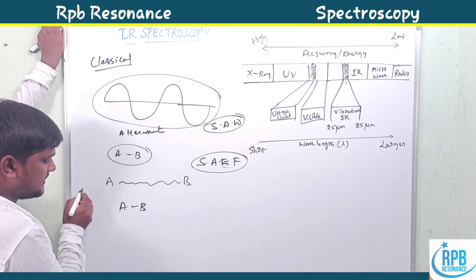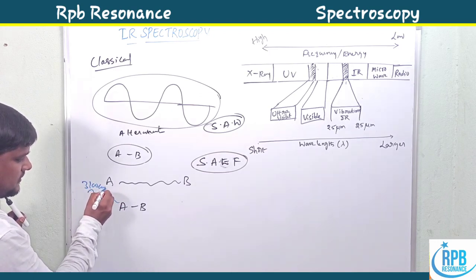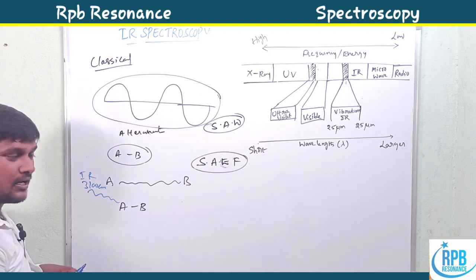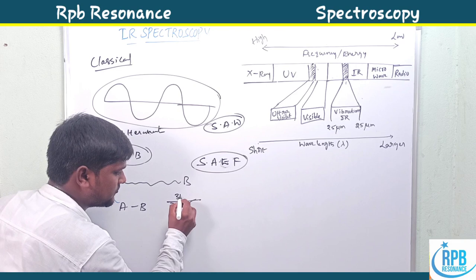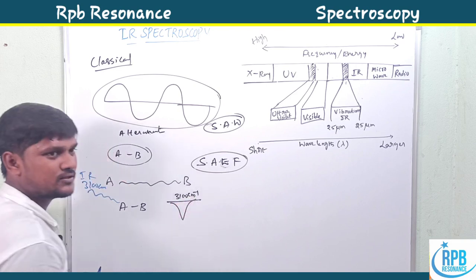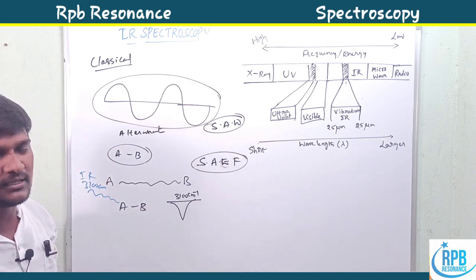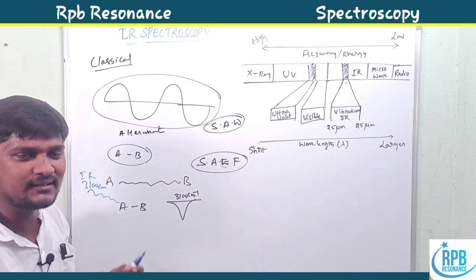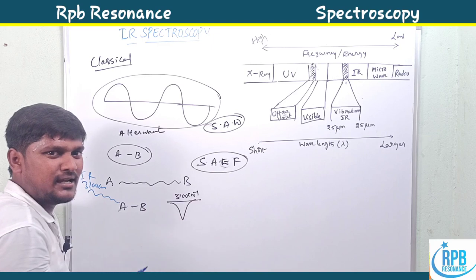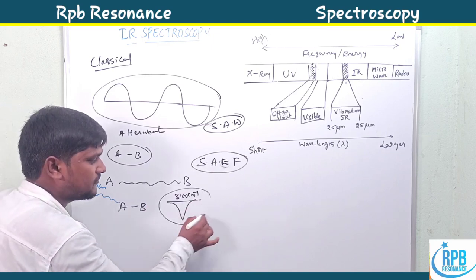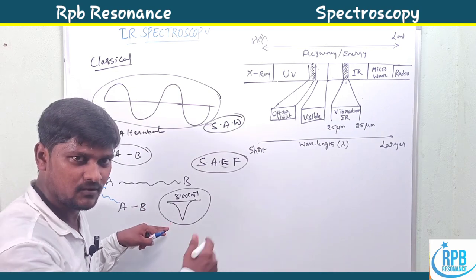Let's imagine molecule AB absorbs around 3100 wavenumber (cm⁻¹) of radiation. It resonates at the same range of IR radiation at 3100 cm⁻¹. The absorbing energy and emitting energy are equal to each other — they match. That is called resonance. A molecule's absorbing energy and emitting energy resonate with each other, and that will appear in the form of a spectrum.